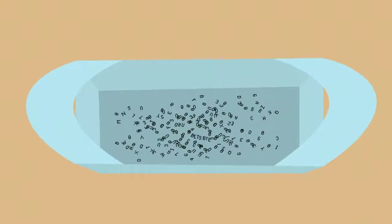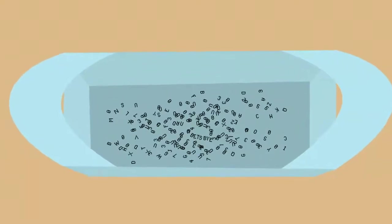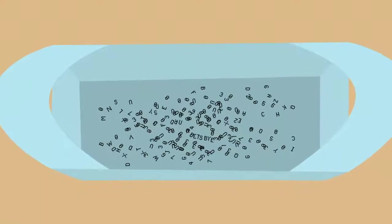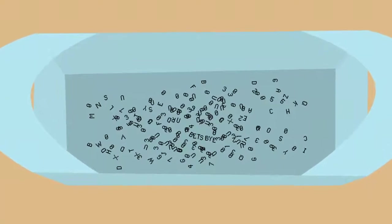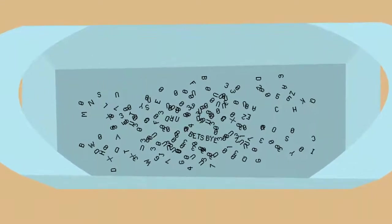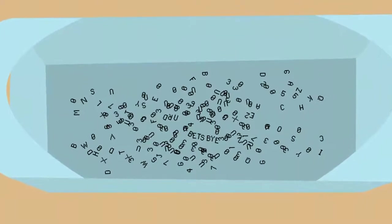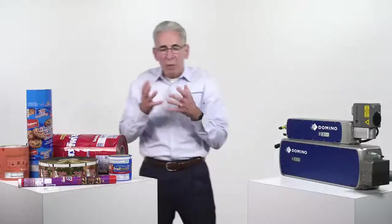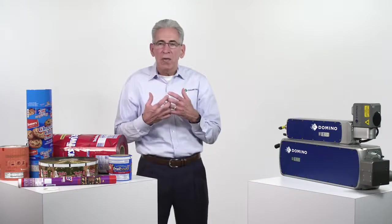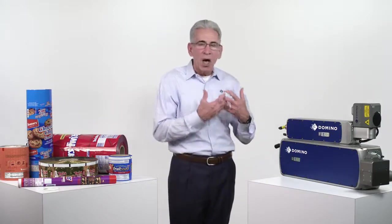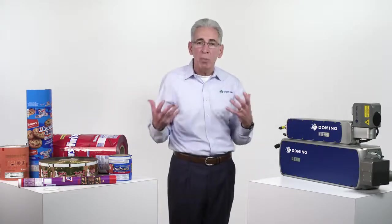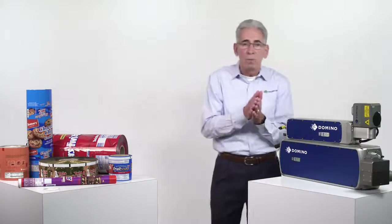He said, now hold the bag up and look underneath. And we could find actual full characters, letters and numbers, that had released from the film just with the packages rubbing up against each other in transport. That was his way of illustrating that even though they had a confident feeling in production, in the supply chain the codes were unreadable.